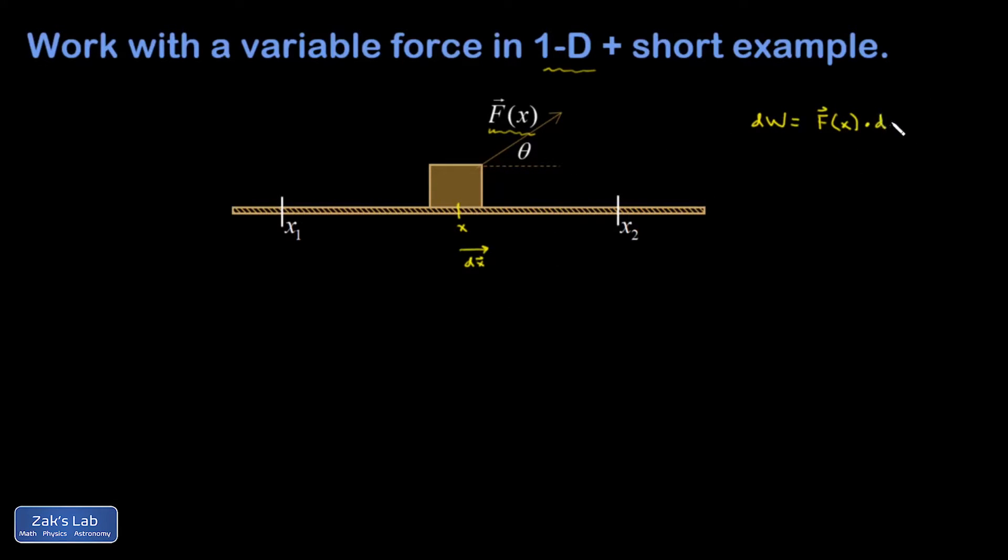And so the total work would be the sum of all those increments, and you would add up all the contributions to the work from the starting position to the finishing position, F of x dotted into dx.